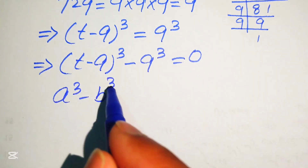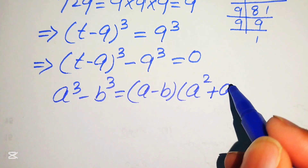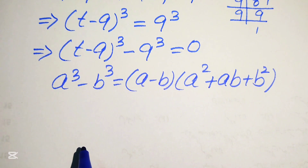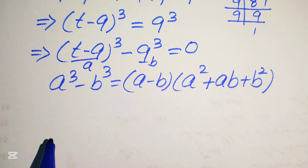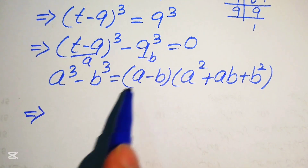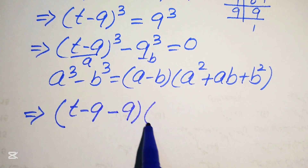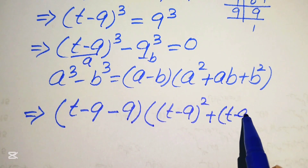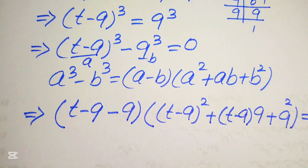The difference of cubes formula states: a³ - b³ = (a - b)(a² + ab + b²). Here our a is (t - 9) and our b is 9. Substituting, we get (t - 9 - 9) times ((t - 9)² + (t - 9)(9) + 9²) = 0.